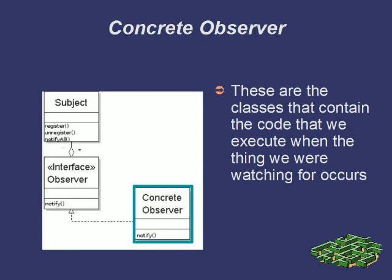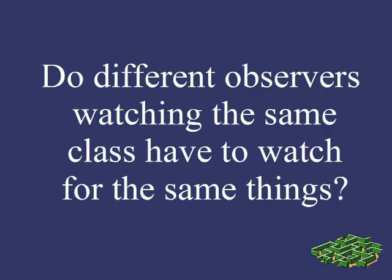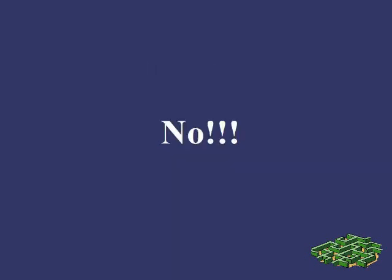Here's a quick question. Let's say that we have some code that implements the observer pattern. Is it necessary that every concrete observer watch for the same kinds of changes in the subject? As it turns out, that isn't necessary. Ordinarily, we have the subjects notify the observers of any change at all in their state, and we have the observers see if they want to take any action.